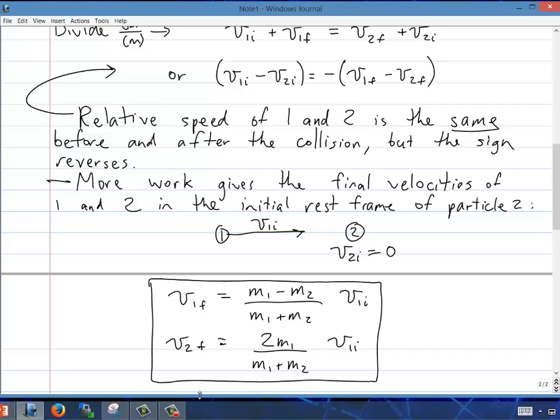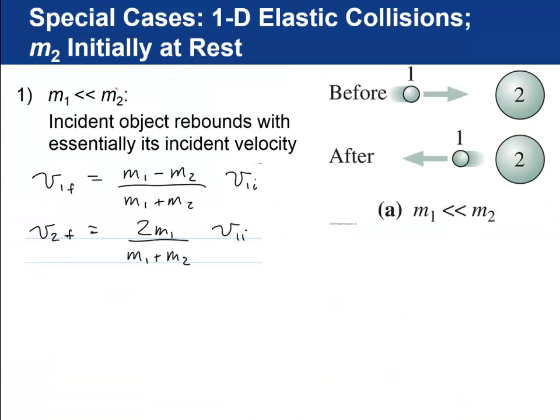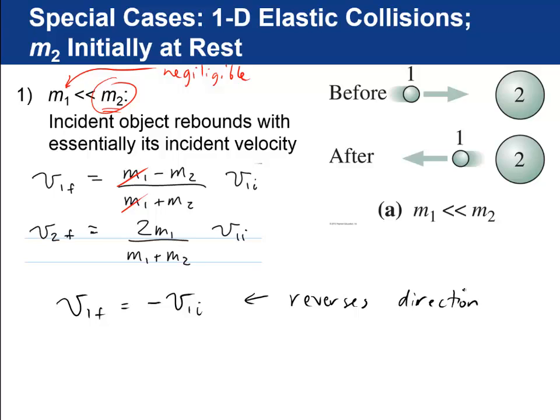I'm going to look at three special cases now. The first special case is when m1 is much less than m2. That means m2 is your big guy and m1's mass is negligible. There's those two equations, so we can just cross off the m1's. So v1 final is just negative v initial, so it just reverses its direction. In v2 final, we've got basically m1 over m2, so it's 0, so no effect. It just sits there.